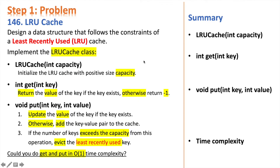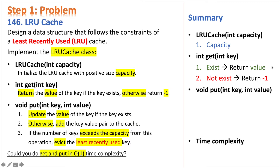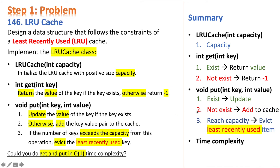Now that we understand how LRU works, let's look at the problem. We implement an LRU Cache class. When we initialize it, we define the capacity. The get function returns the value of the key if it exists, otherwise returns -1. For the put function, we update the value of the key if it exists, otherwise add the key-value pair to the cache. If the number of keys exceeds capacity, we evict the least recently used one. Both get and put must have O(1) time complexity.